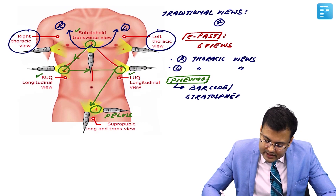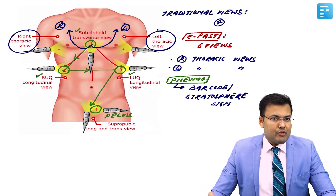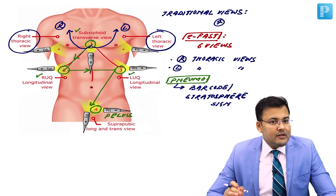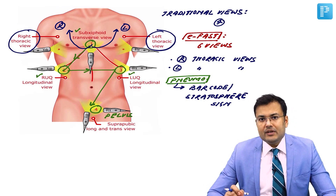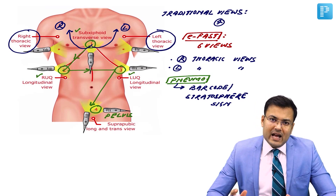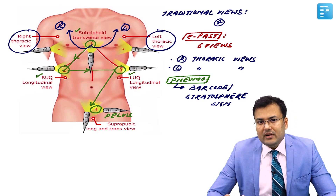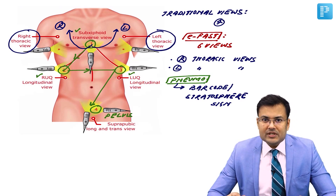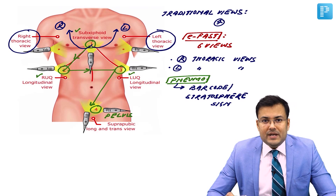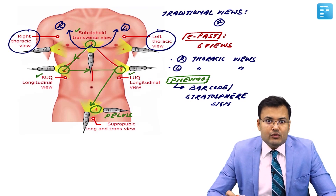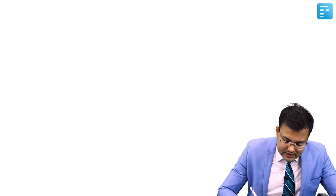These are the important points related to FAST. FAST is the first investigation done in patients of blunt trauma abdomen, and it has replaced DPL. Nowadays we generally don't go for DPL in the majority of blunt trauma abdomen patients. DPL stands for Diagnostic Peritoneal Lavage.